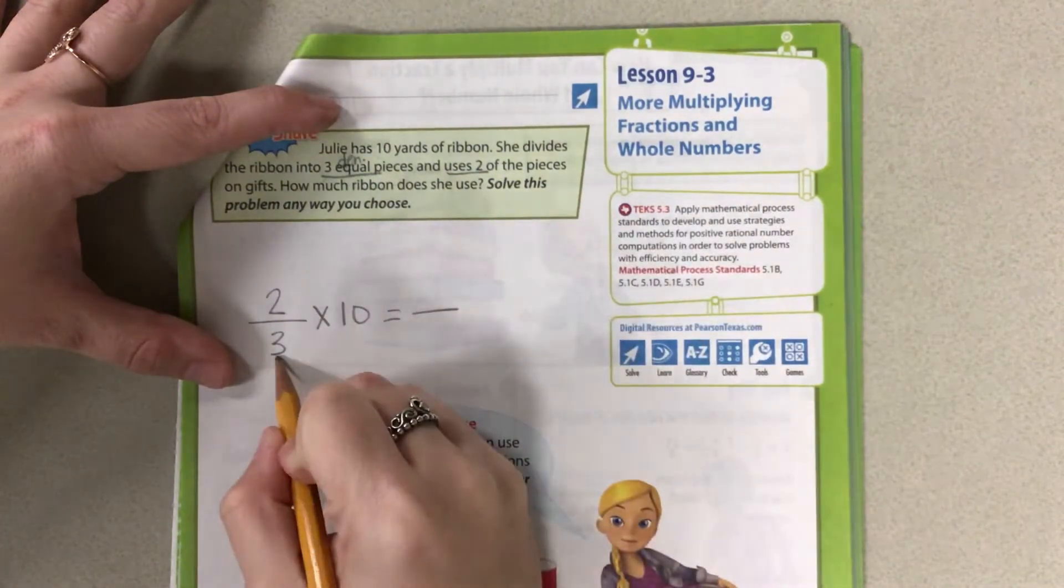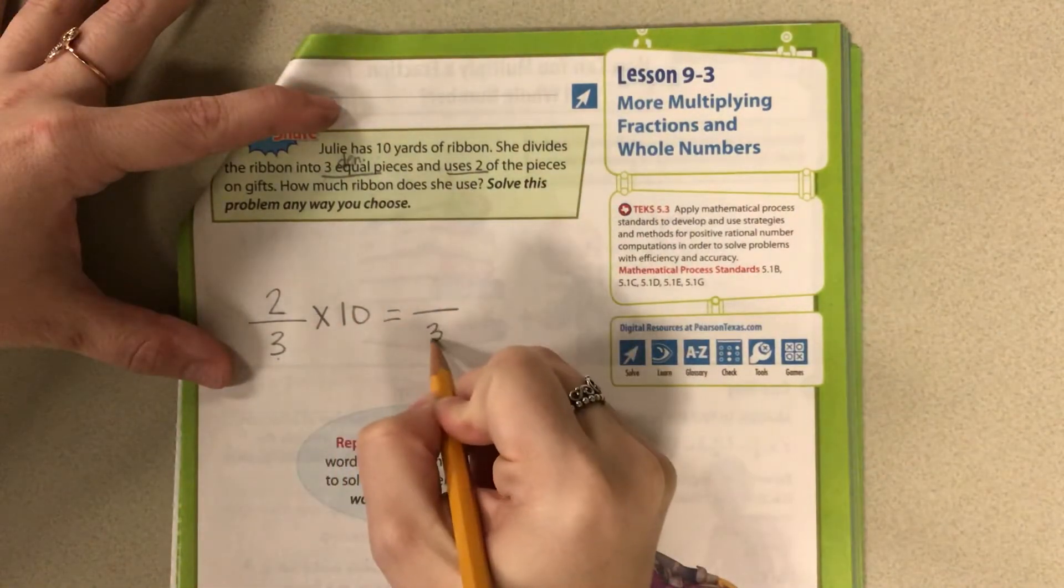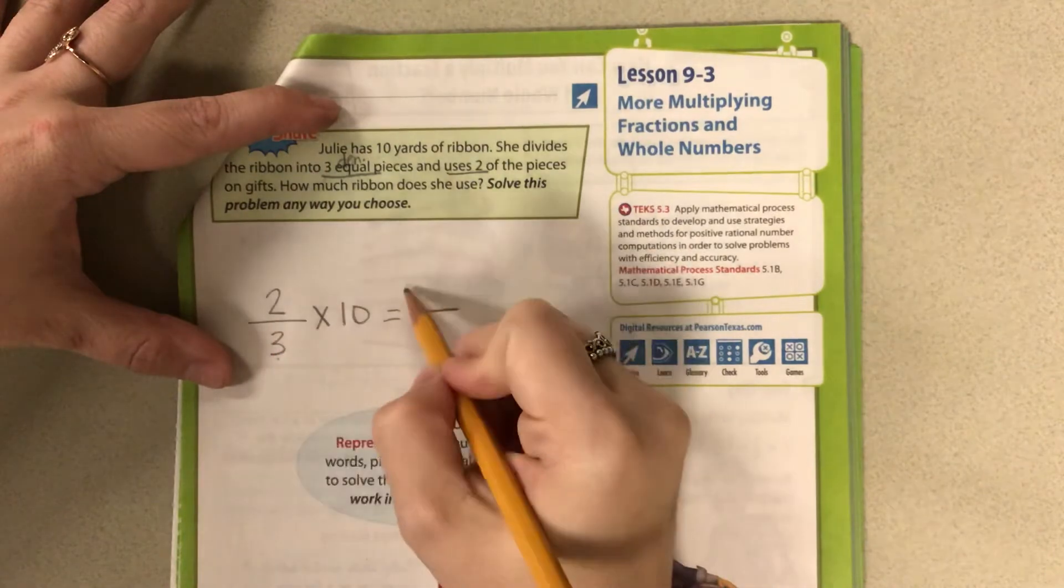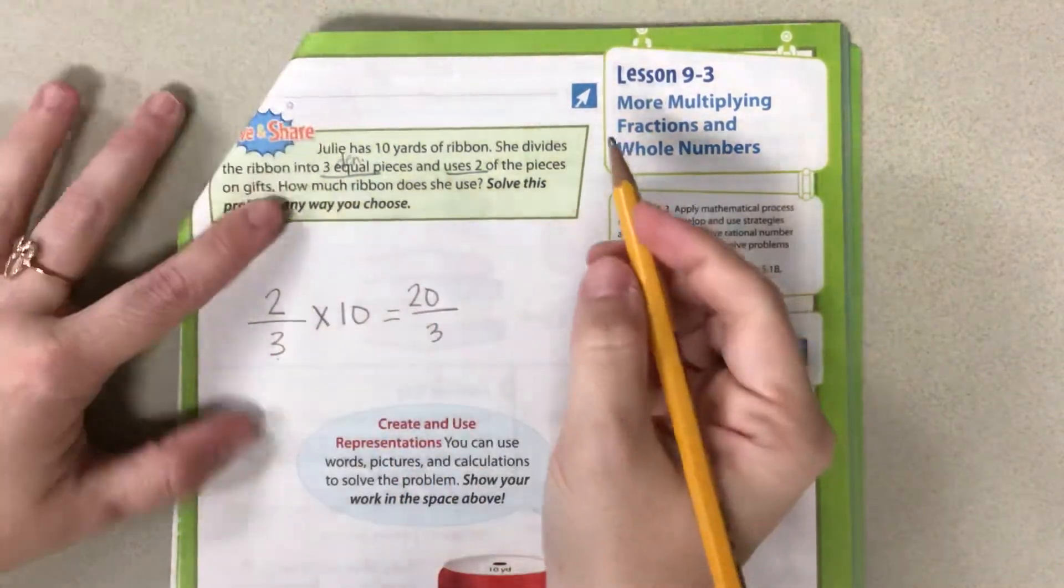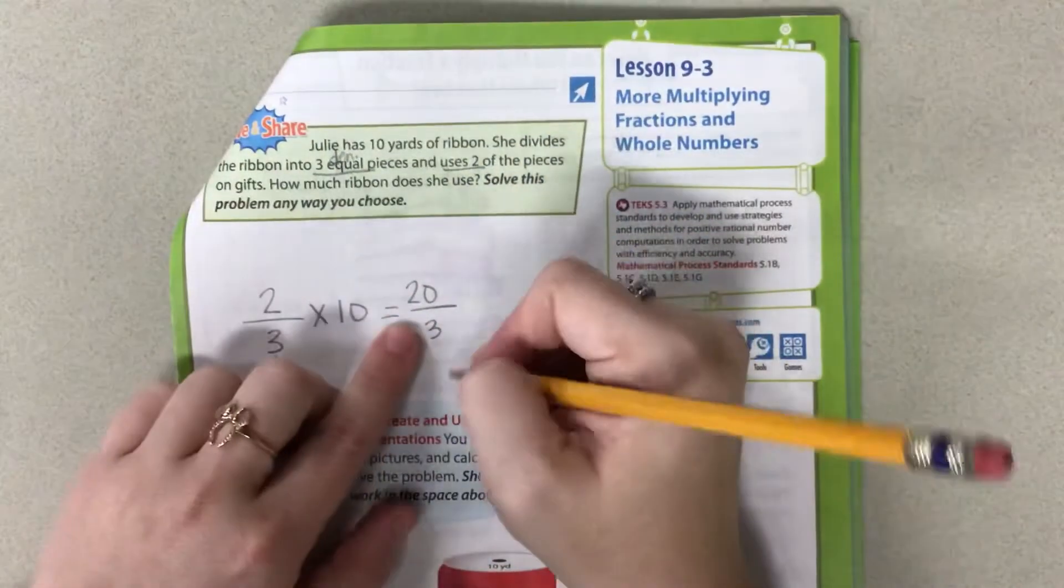So then we're going to multiply by 10. Remember, our denominator stays the same. So 2 times 10 is 20. And then now we can divide.